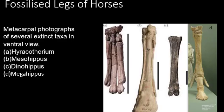These are photographs of the ventral view of metacarpals of several extinct taxa of horses. Figure A depicts Hieracotheriam with four digits. This one shows the fused digits belonging to Mesohippus. This metacarpal fossil has two digits and belongs to Dinohippus, and here three digits are present belonging to Megahippus.